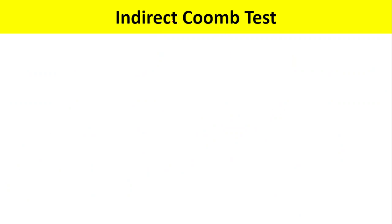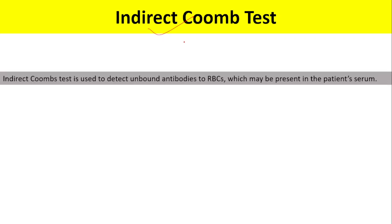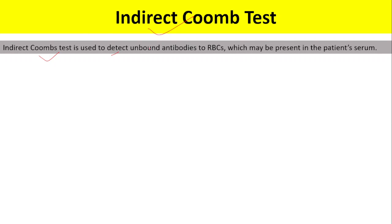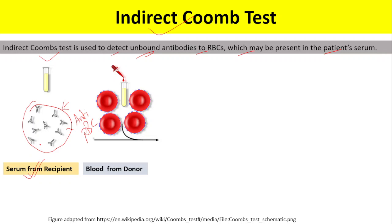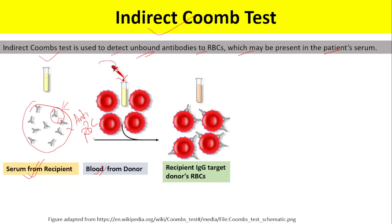The indirect Coombs test is used to detect unbound antibodies to RBCs that may be present in the patient's serum. In this test, we take serum from the recipient — which contains anti-RBC antibodies — and we add a blood sample from the donor into the recipient's serum and incubate it. The anti-RBC antibodies then bind with the red blood cells from the donor.